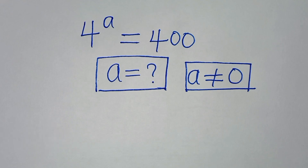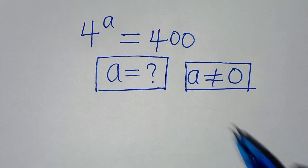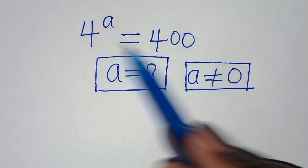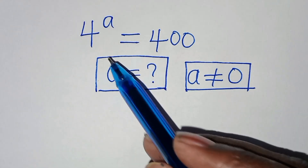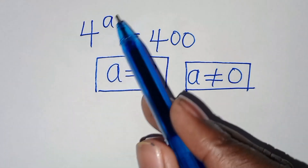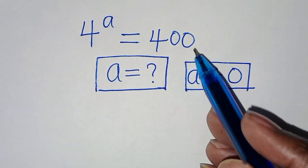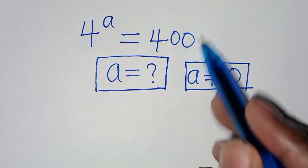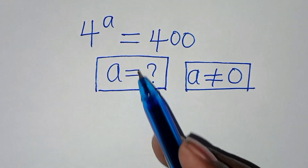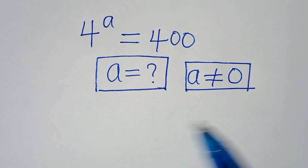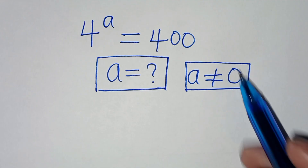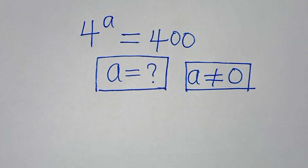Hello everyone, you are welcome to solve this nice exponential question, which is 4 to the power of a equals 400. What is the value of a, given that a is not equal to 0?